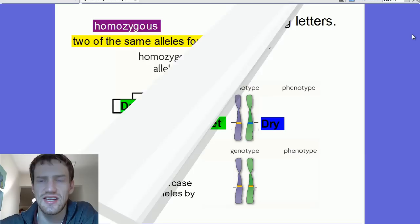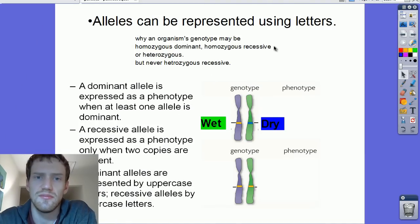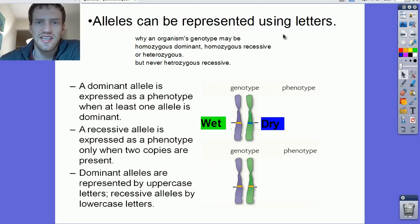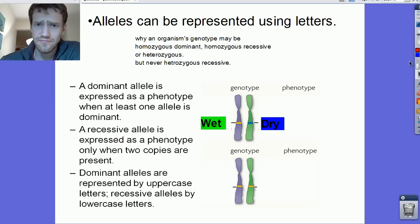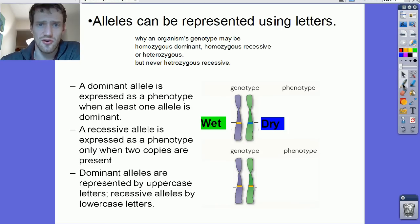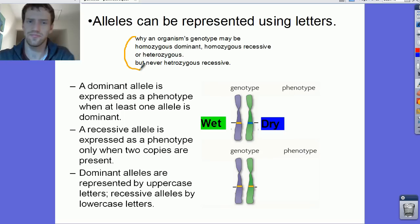Alleles can be represented using letters. One of the questions that commonly gets asked is why an organism's genotype may be homozygous dominant, homozygous recessive, or heterozygous, but never heterozygous recessive. That's kind of a confusing question. So let's look at what's going on there.